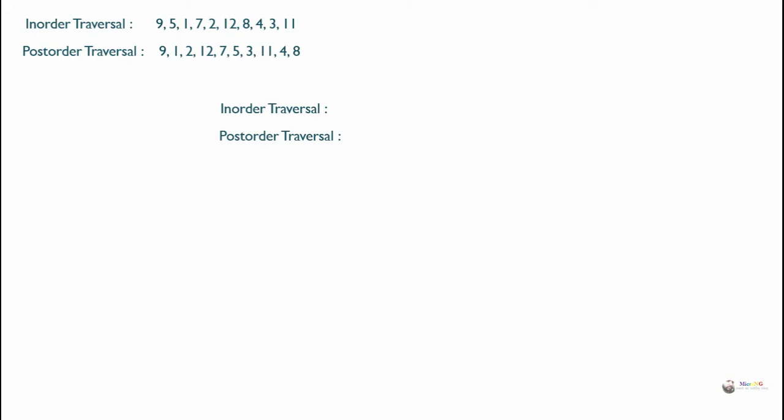Now look at the given in-order and post-order traversal. We always look at the end of post-order traversal. The last element of post-order traversal becomes the root, which is 8. Now locate 8 in in-order traversal. All elements on the left of 8 — which are 9, 5, 1, 7, 2, and 12 — will become the left subtree, and all elements on the right of 8 — which are 4, 3, and 11 — will become the right subtree.